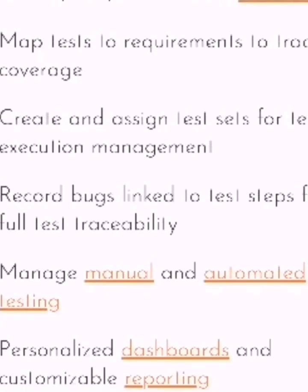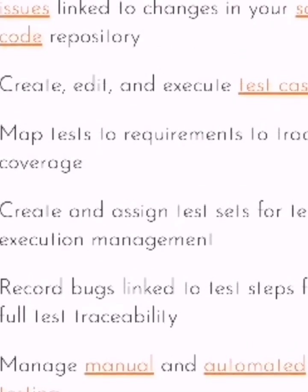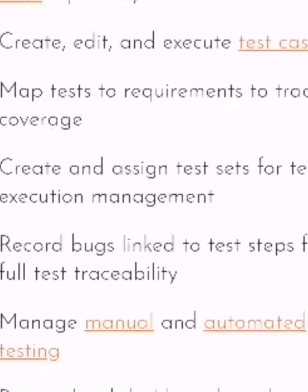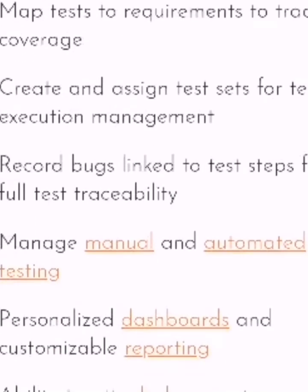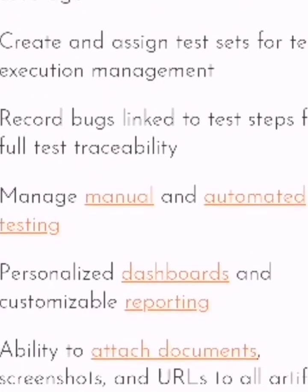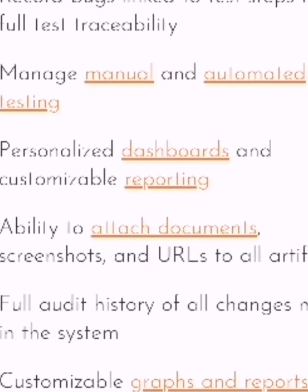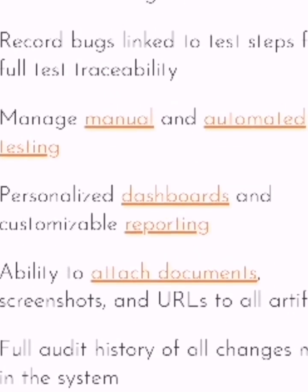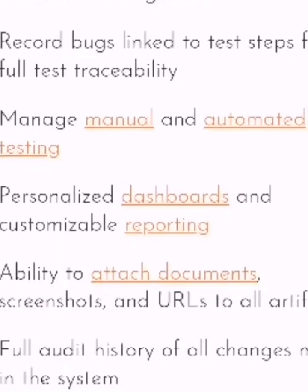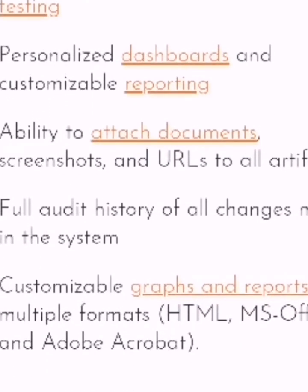Number four: track bugs, enhancements, risks, and issues linked to changes in your source code repository. Number five: create, edit, and execute test cases. Number six: map tests to requirements to track coverage. Create and assign test sets for test execution management. Record bugs linked into test steps for full test traceability.